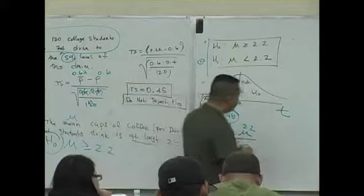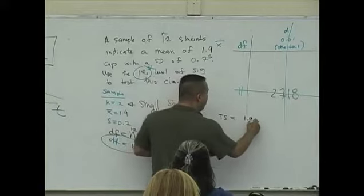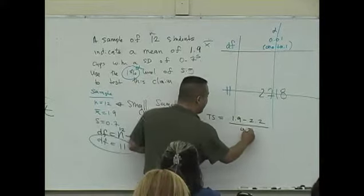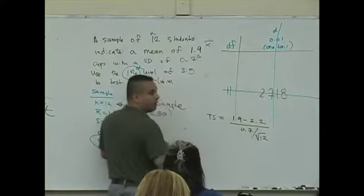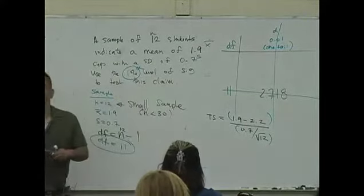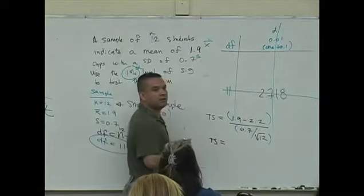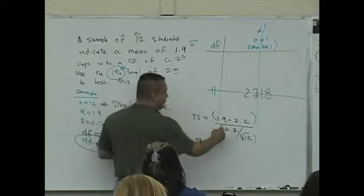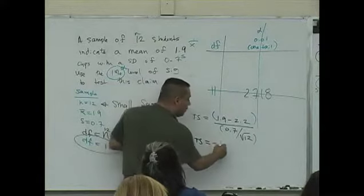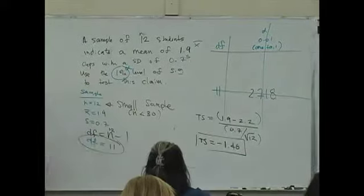So now, if we compute this test statistic, we're looking at the difference of 1.9 minus 2.2 over 0.7 divided by the square root of 12. The numerator is in parentheses, the denominator is in parentheses. You enter this in your calculator, and what do you get as a test statistic value? It's going to be negative 1.48.